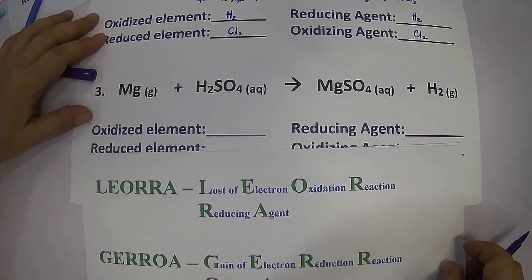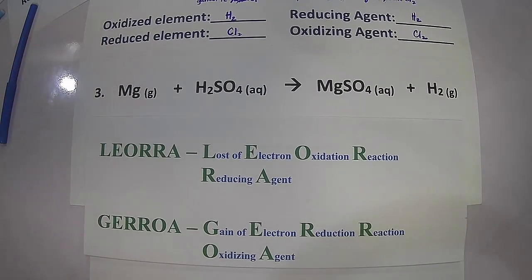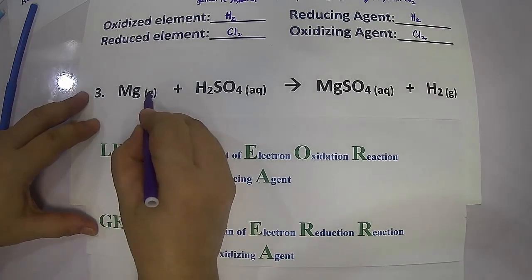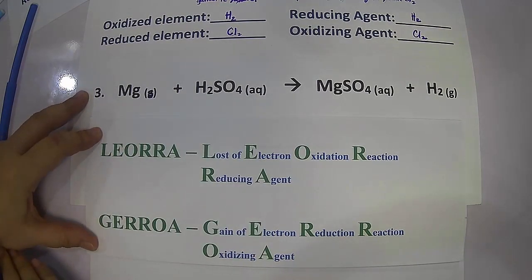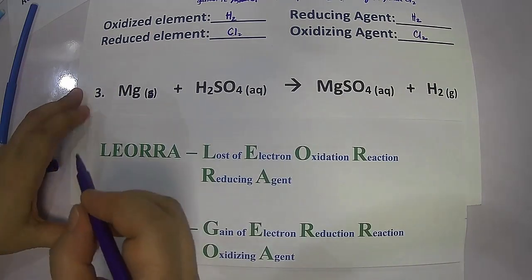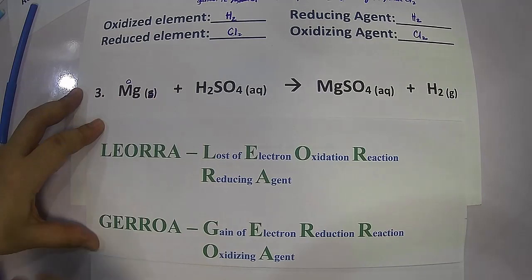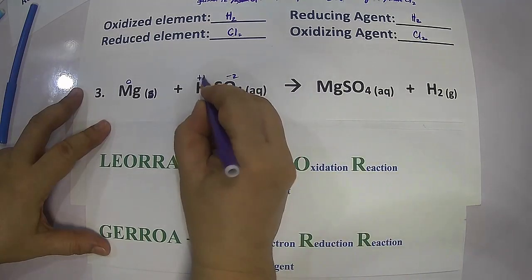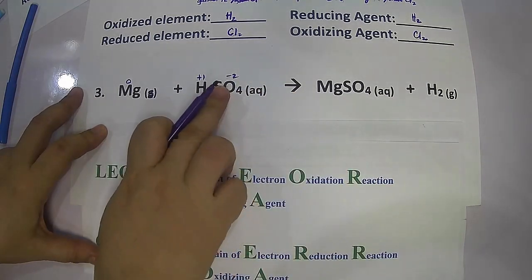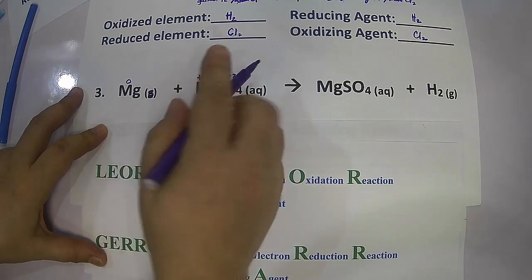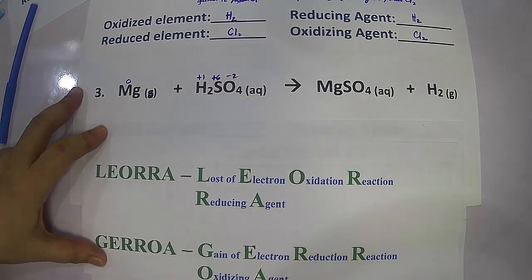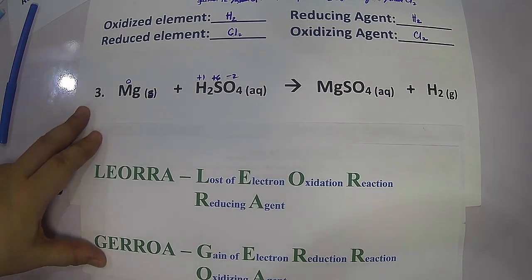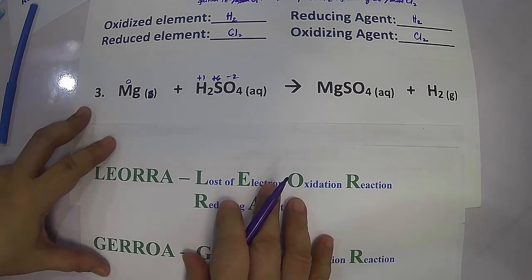Moving on to the next example: magnesium solid reacts with sulfuric acid (aqueous), giving magnesium sulfate (aqueous) and hydrogen gas. Magnesium in its elemental state is zero. In sulfuric acid, oxygen is negative two and hydrogen is positive one — giving positive two plus negative eight — so sulfur must be positive six to make the sum equal to zero. I hope you have gained that skill from the previous discussion on assigning oxidation numbers.